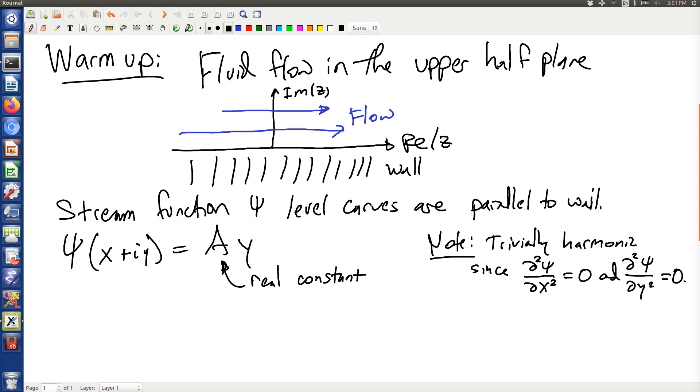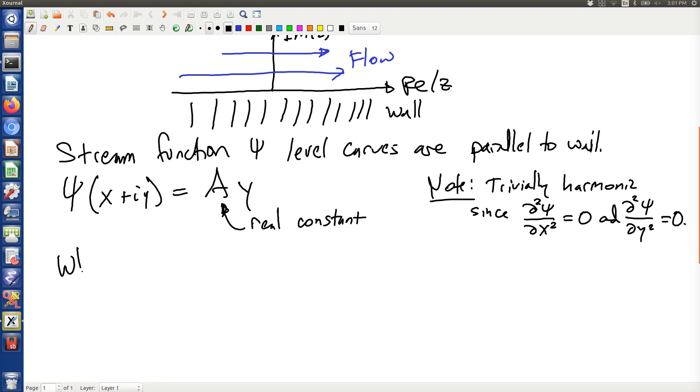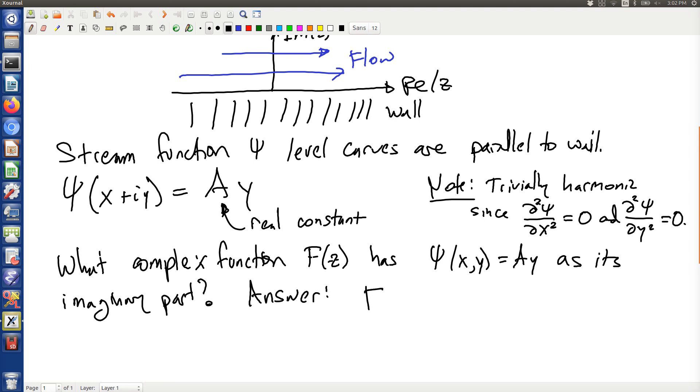If I look at what complex function F(z) has ψ(x,y) = Ay as its imaginary part, well, that looks pretty easy because it's got the y in the imaginary part. The y feels already naturally like an imaginary part of a complex number. The answer is easy to come by. Just F(z) is equal to a times z. Again, this a is real. Because, of course, this would be ax plus i ay, just as we wanted.